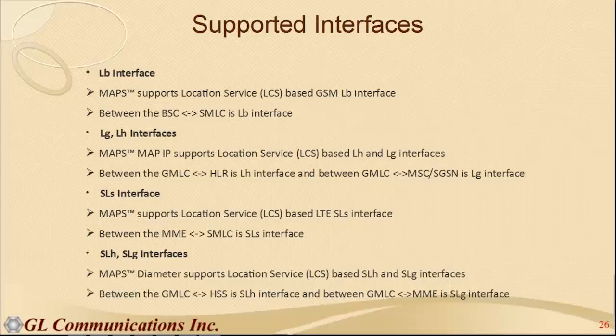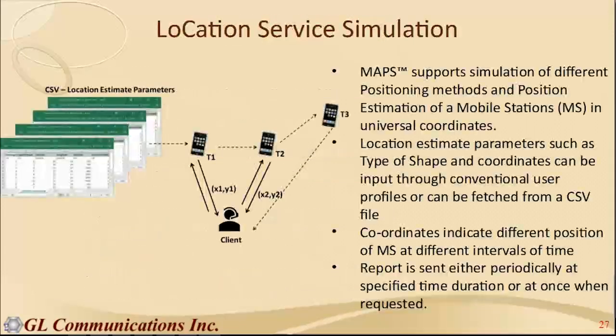Before going to the network architecture, two simulation methods exist. The first is a conventional profile-based method where location information — altitude, longitude, latitude — is stored in a profile. The second is a CSV-based method where these parameters are stored in CSV files and fetched at different intervals of time to simulate different positions of a mobile device.